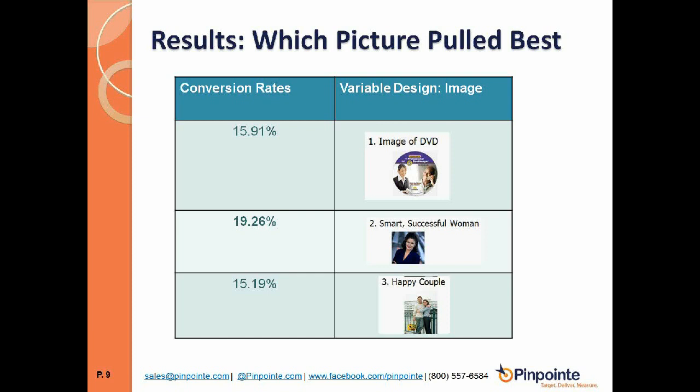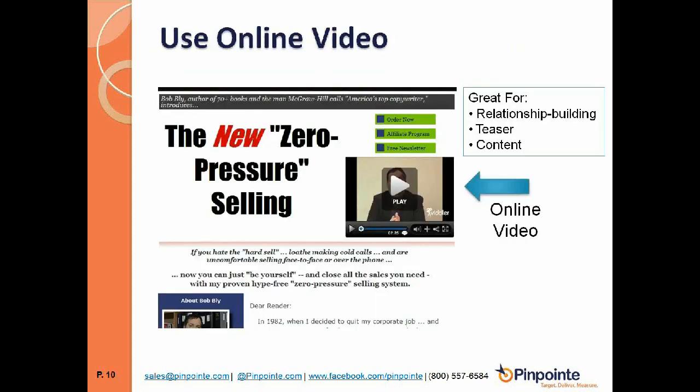Landing pages lend themselves very well to testing — better than print or direct mail — because you can test rapidly. You can do multivariate or multiple-variable testing, testing more than one variable at once. If you want to keep things simple, a lot of easy-to-use software is available that will do at least an A/B/C split test — like the split of these three images, which was done here, and you can see the results.